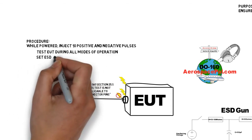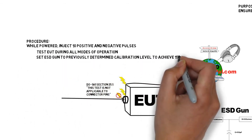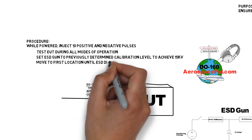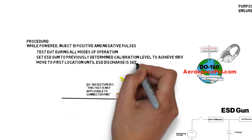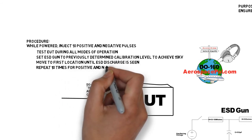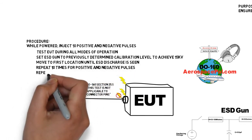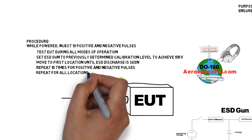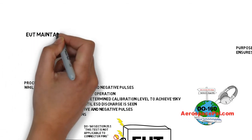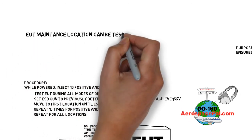Simply charge the ESD generator to the CAL level determined previously. Move it towards the test point, and then when the ESD generator discharges or creates contact with the point, withdraw it for recharging on the next test. Repeat 10 times in the positive and negative direction and you're done.